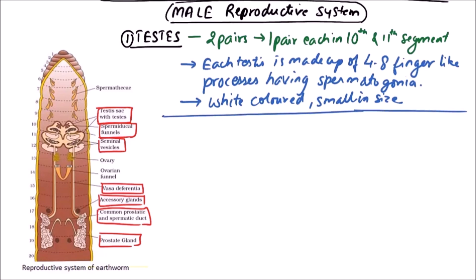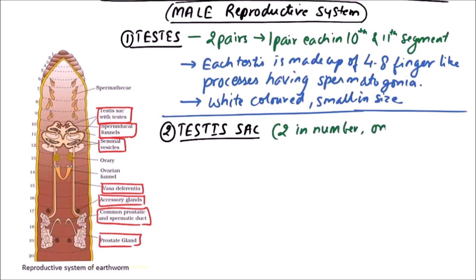Now the next one is testis sac. Testis sac are 2 in number, 1 in each of the 10th, 11th, and 12th segments. Some authors suggest that 1 testis sac is bilobed, so 2 testis sacs are there. While some authors suggest that testis sacs are 4, 1 for each testis.